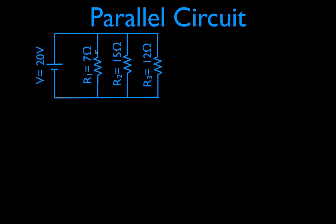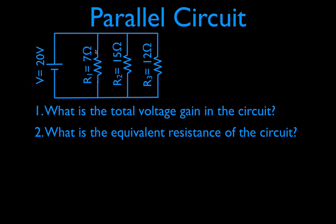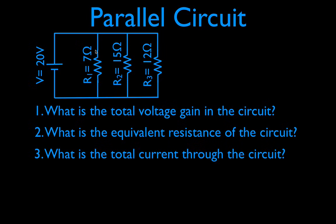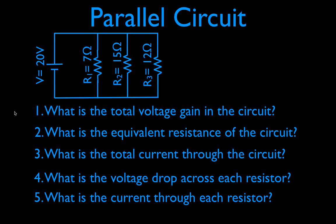Now these are the five things we're going to do. First we're going to get the total voltage gain in the circuit. Then we're going to get the equivalent resistance, or the total resistance, in the circuit. Then the third thing is we're going to get the total current. Now these are what I like to call the big three — we have to get these three totals taken care of. Then we can figure out the voltage drop across each resistor, and then the current through each of the three resistors.